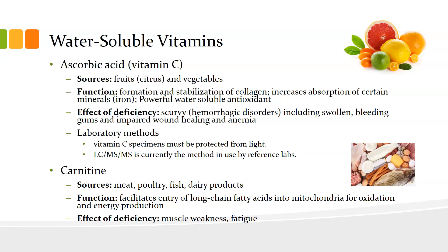Ascorbic acid is vitamin C. Sources are citrus fruits and vegetables, especially yellow and orange varieties. It functions in the formation and stabilization of collagen throughout the body, and increases absorption of certain minerals such as iron — for example, taking iron supplements with orange juice enhances absorption. It is also a powerful water-soluble antioxidant that supports immune function when sick. Deficiency causes scurvy — a hemorrhagic disorder including swollen bleeding gums, impaired wound healing, and anemia. Lab method requires protection from light; LC-MS/MS is currently used, sent to a reference lab.